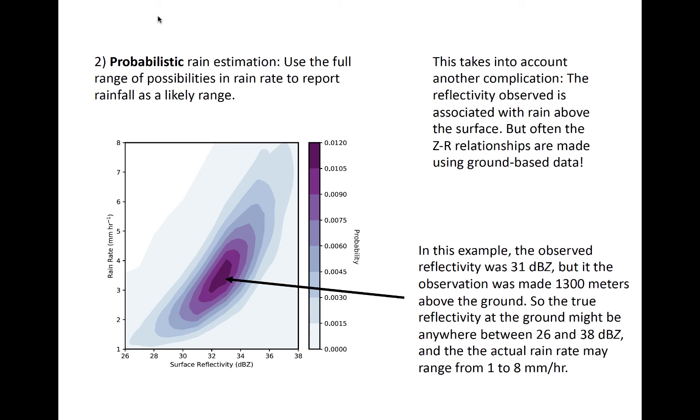This plot shows a two-dimensional histogram that describes rain rate for a 31 dBZ echo observed at an altitude of 1300 meters. The actual reflectivity of the ground in this subset of data for such an echo, based on radar data, may range from anywhere between 26 and 38 dBZ.